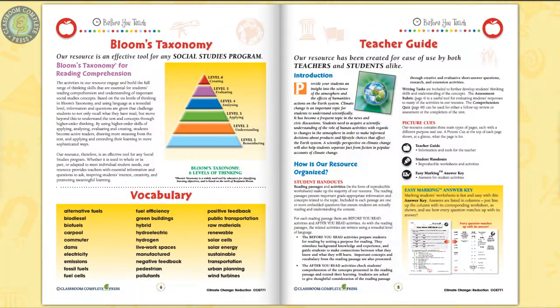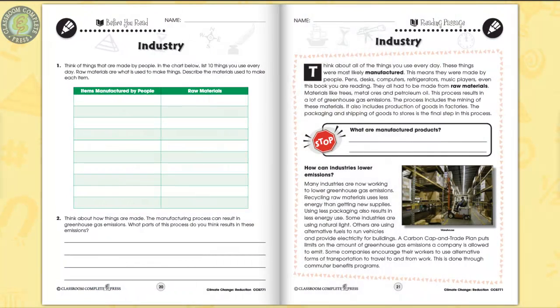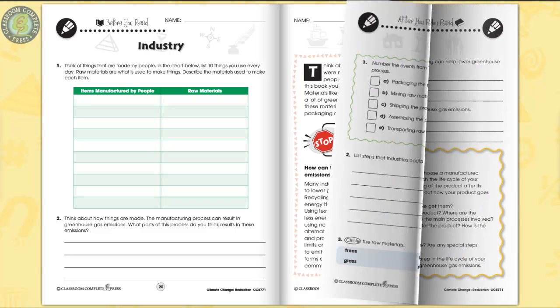We also include an assessment rubric, a critical thinking skills rubric, and a vocabulary list. Every chapter has a Before You Read section to see what learners already know about the topic, ideal for differentiated learning.